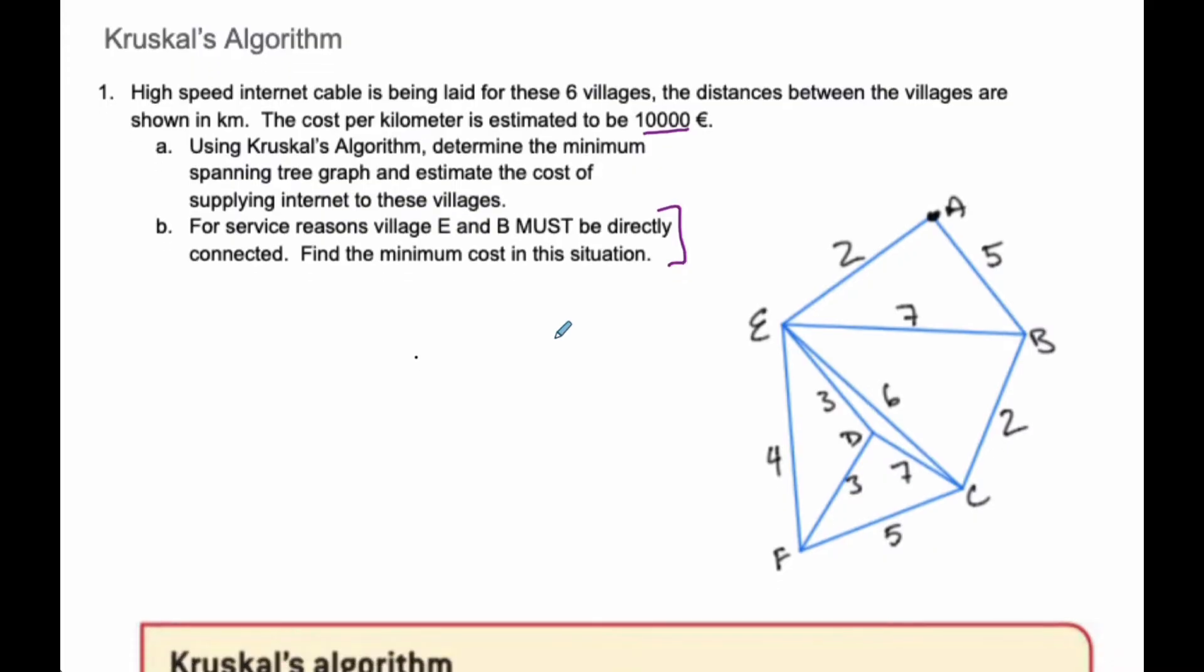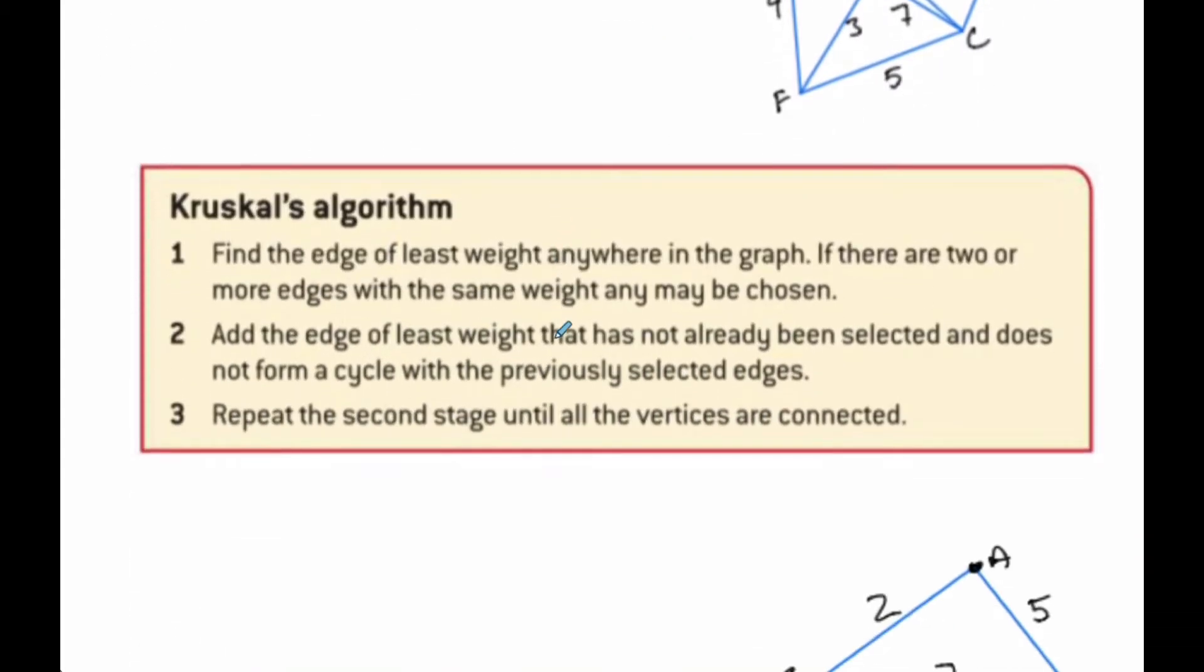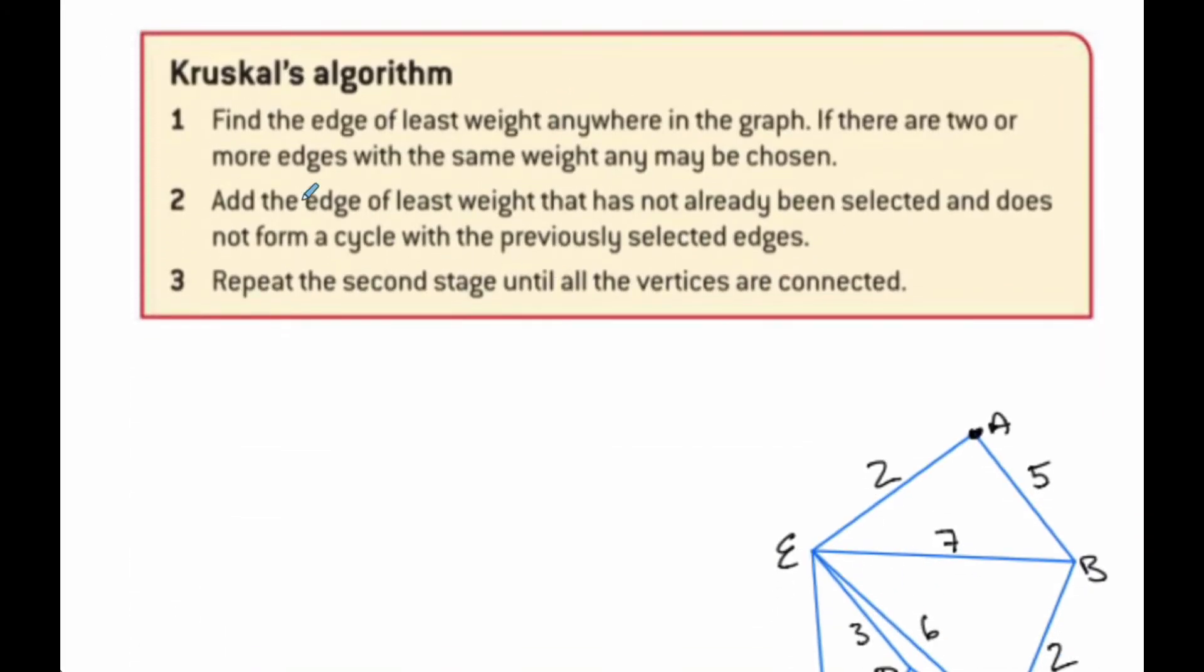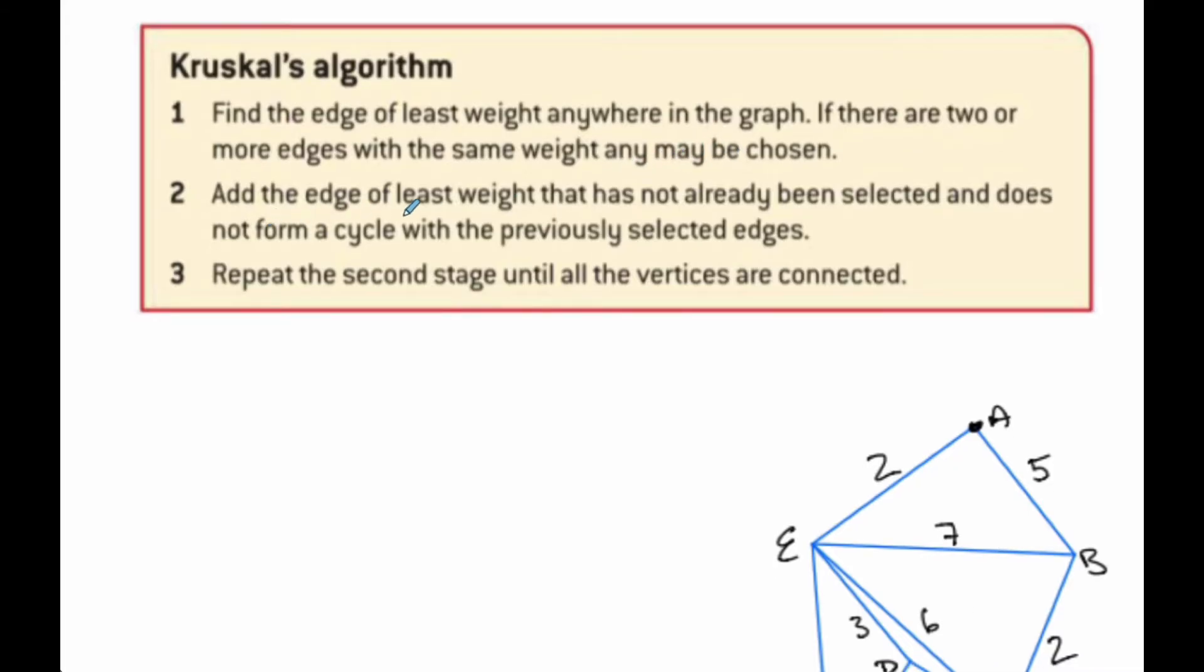In order to do this we need to know what Kruskal's algorithm is, and here are the steps. We find the edge of the least weight anywhere in the graph, and if there's two or more edges of the same weight, any of them can be chosen. Then you add the edge of least weight that has not already been selected and does not form a cycle. That's key. You do not want any cycles, because then you don't have a tree.